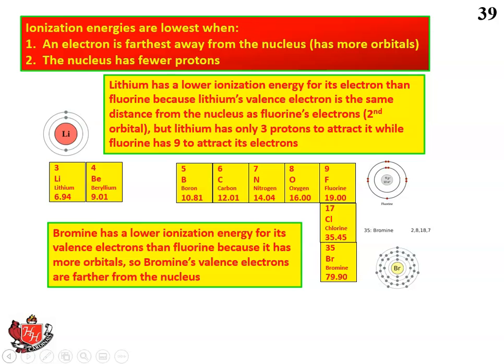Ionization energies are lowest when an electron is farthest away from the nucleus — that is, elements that have more orbitals. Their valence electrons are farther away from the nucleus, and the nucleus has fewer protons. Let's look at the second factor first. Lithium has a lower ionization energy than fluorine because lithium's valence electron is the same distance from the nucleus as fluorine's — in other words, they're both in the second row, so both of them have two orbitals. Even though fluorine has more electrons in its second orbital, they're all side by side and can all see into the nucleus equally.